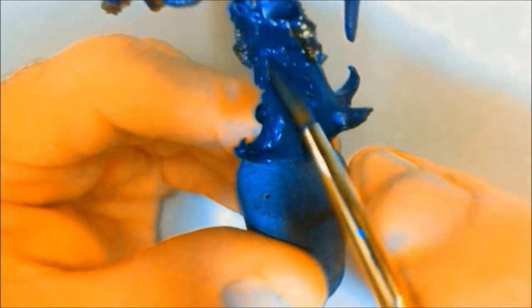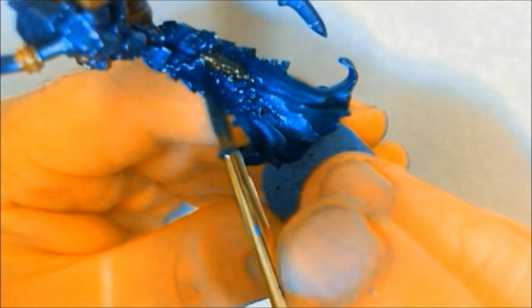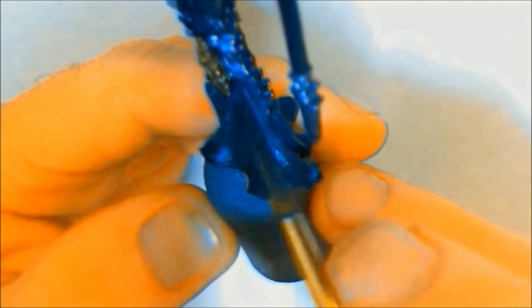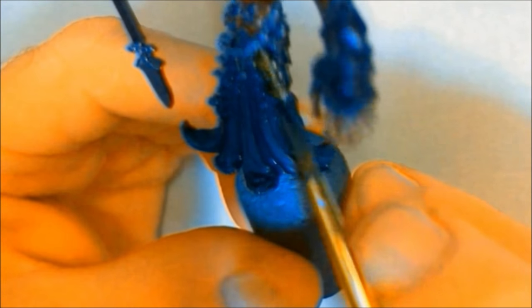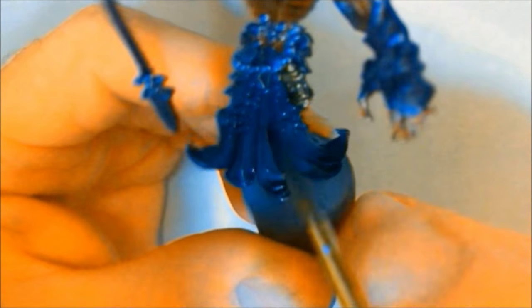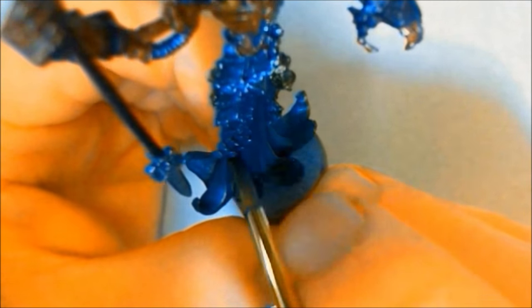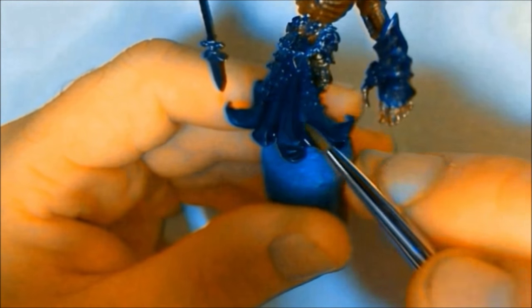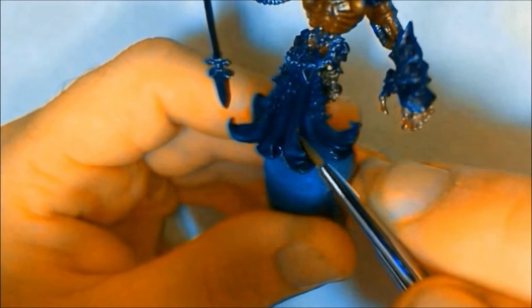I'm going in with Crick's Bane highlight to highlight the Crick's Bane base, just working up the folds of the cloak. Later I'm going to go in with Thamar Black and hit the deep recesses. Those are the only three colors I used. No added white or any kind of rucksack tan to the highlight color. It really does give it good contrast.